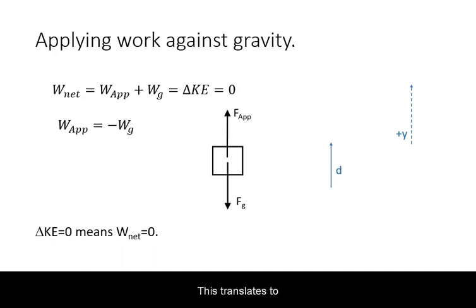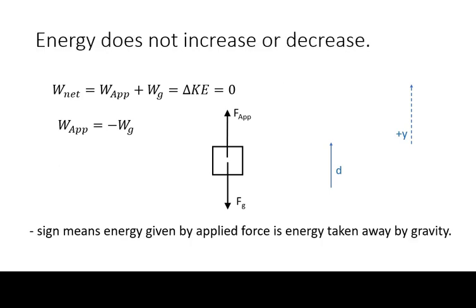This translates to the net work being zero. Because the only two forces are the applied force and gravity, this means that the work done by each must have the same magnitude.